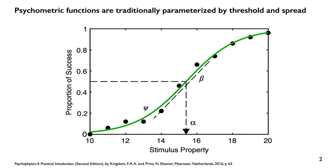Here we have a basic psychometric function in green, mapping stimulus property along the horizontal axis to task performance along the vertical axis. In this case, task performance is probability of success. This psychometric function cannot be observed, only estimated. Additionally, the values used to fit the model, shown as black circles, also cannot be observed and must be estimated. Each circle represents the proportion of success for a particular value of each stimulus property.